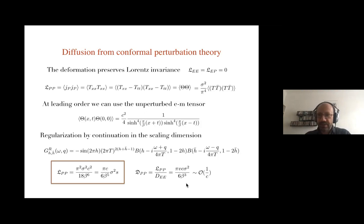The diffusion constant goes like c·σ², and in the scaling limit relevant to gravity it is suppressed by 1/c — that is why we observe no diffusion in the gravity solution.